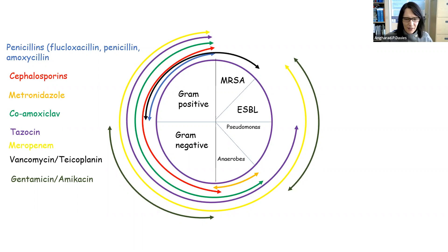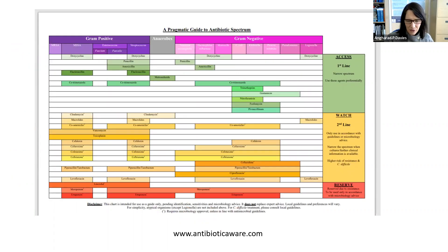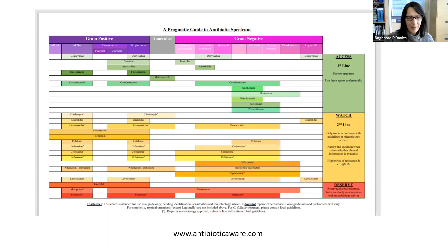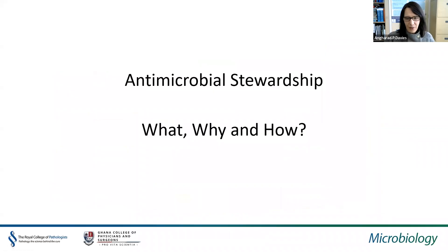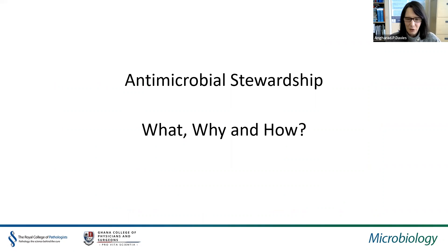The antibiotic wheel is a useful visual way to show people the different spectra. A more detailed chart is also available at www.antibioticaware.com, which shows the specific range of activity of commonly used antibiotics. That concludes the section on antibiotic spectra; this is a good place to pause the recording if you want to consider antimicrobial stewardship later on.